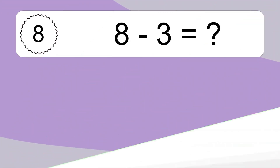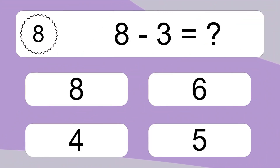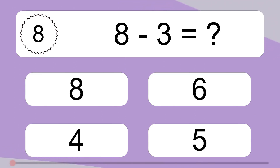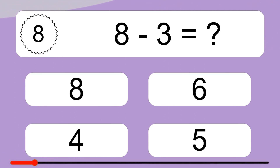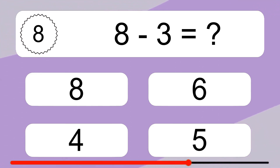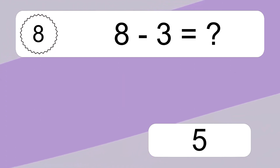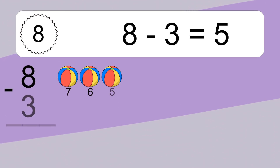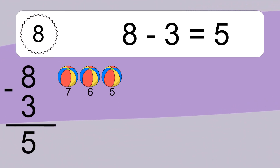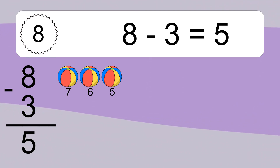8 minus 3 equals what? 8 minus 3 equals 5. Let's count it: 7, 6, 5.